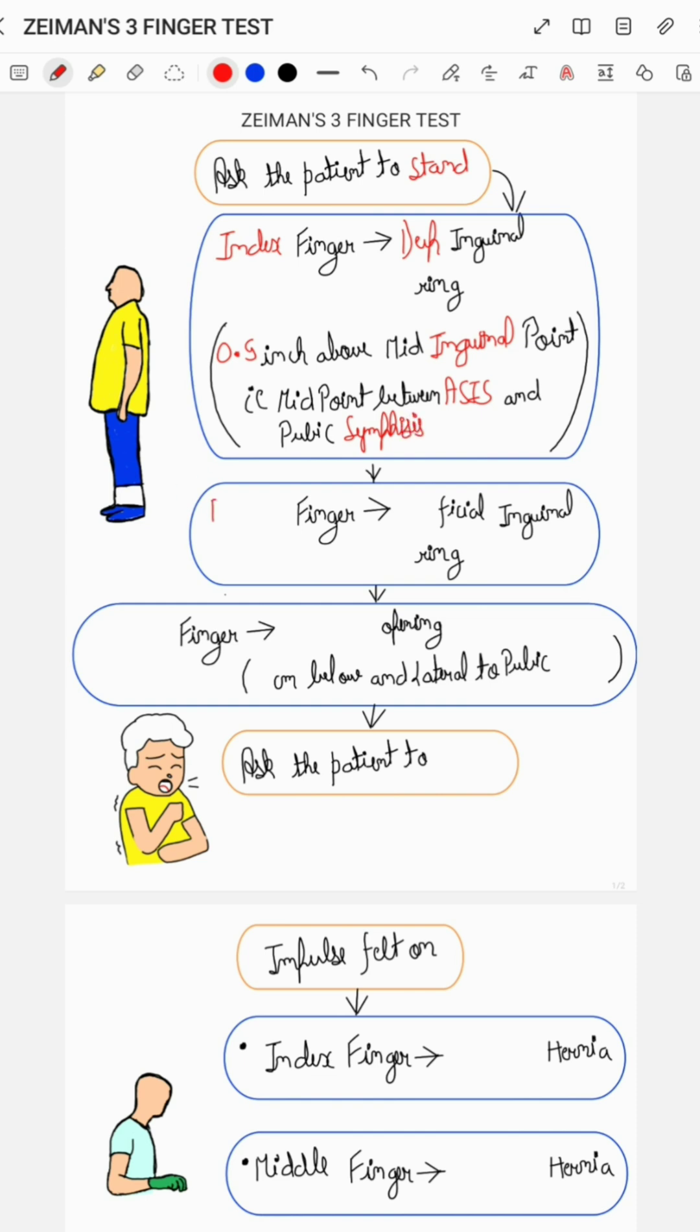Place your middle finger over the superficial inguinal ring. Place your ring finger over the femoral opening, which is 4 cm below and lateral to the pubic tubercle, and ask the patient to cough.